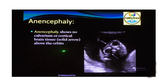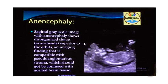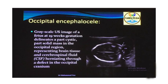Anencephaly shows no calvarium and no cortical brain tissue. What is seen is not brain tissue but just fibrous tissue. In anencephaly, there is no calvarium and no brain tissue. On a sagittal view (the first was coronal), the grayscale image shows disorganized tissue superior to the orbits — this is not brain tissue and is not compatible with normal brain; it is basically pseudo-angiomatous stroma.